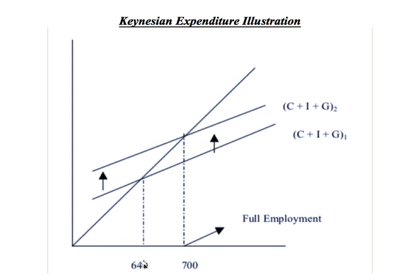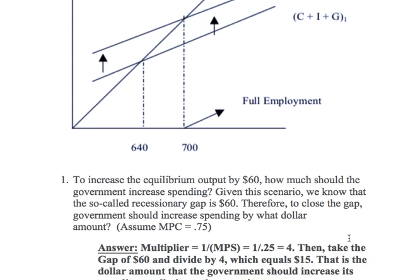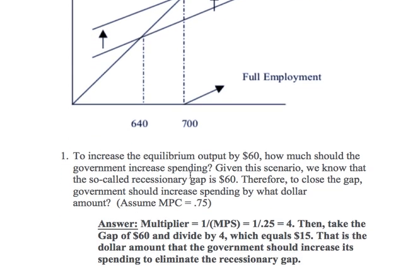How do I eliminate the recessionary gap of 60? The Keynesian approach will focus on two things: spending by the government and taxation by the government. In this illustration, I want to know how I'm going to increase the equilibrium output by $60 using government spending.